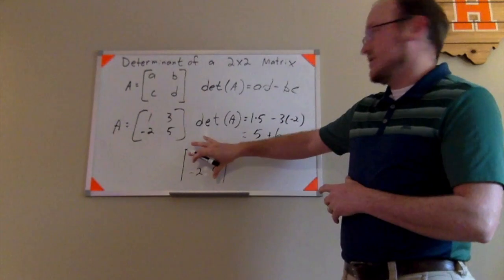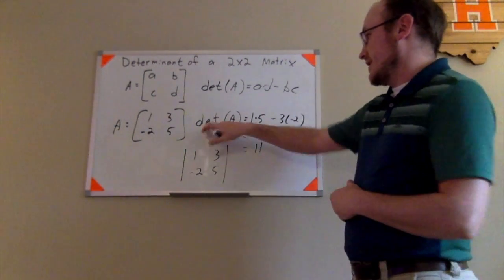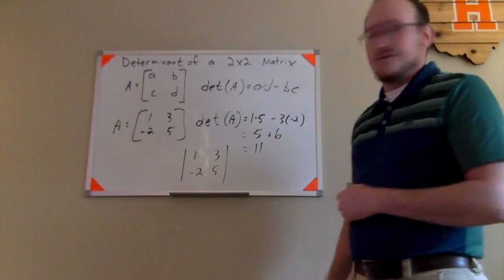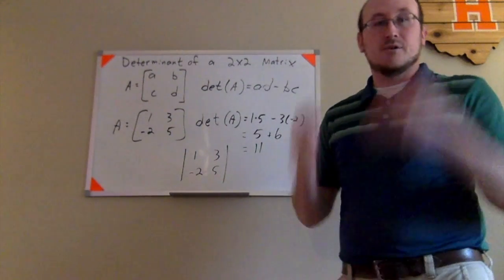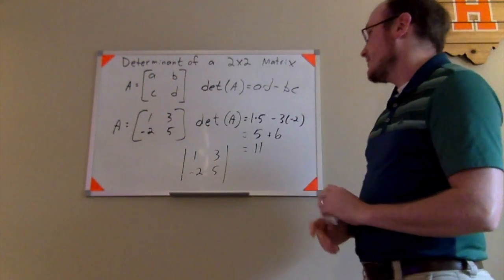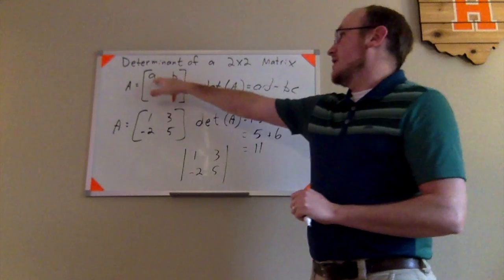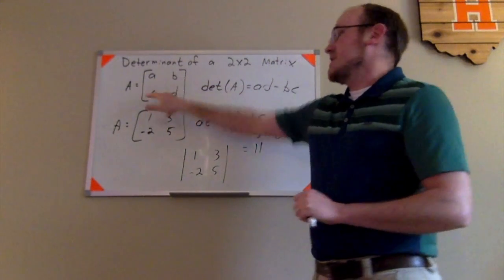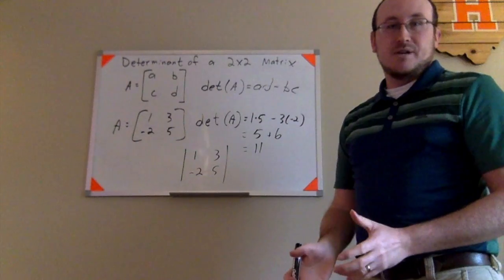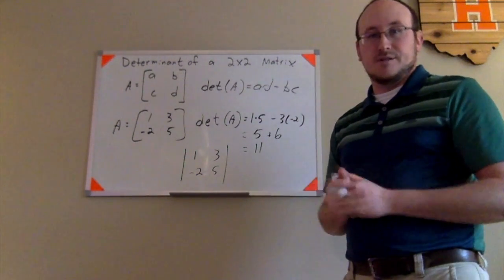That's another way to indicate that they want you to find the determinant of this, instead of saying determinant of A. So if you see it in the vertical bars, they're asking you what's the determinant. And again, it's just the product of A times D minus the product of B times C. Be careful you don't make sign mistakes and simplify that, and it's pretty easy from there.